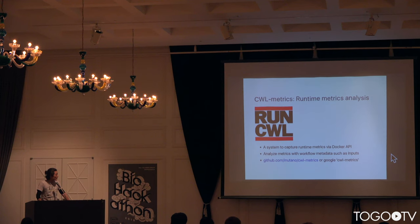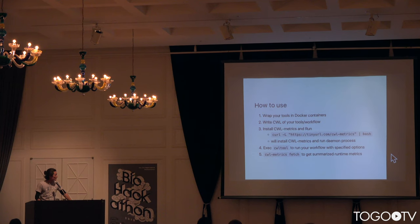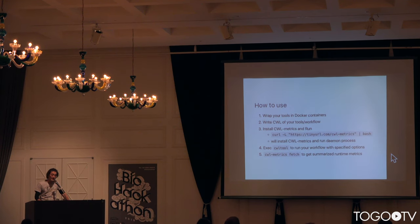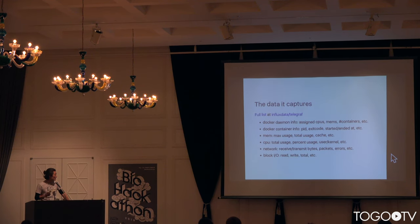I created CWL Metrics, which collects runtime metrics via the Docker API and analyzes the metrics with workflow metadata extracted from the CWL workload description. You can get the CWL Metrics system from GitHub, and it's really easy to use. Wrap your tools in Docker containers — CWL Metrics depends on Docker containers. Write your tools and workflows in CWL, execute with cwltool, the reference implementation for CWL, and then use the CWL Metrics command to fetch and summarize runtime metrics. You can capture almost all the information you need to analyze the workflow metrics.